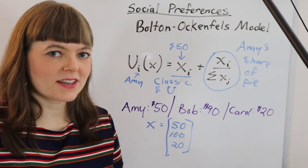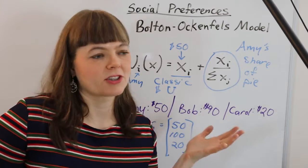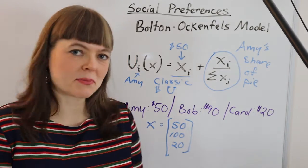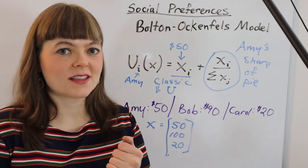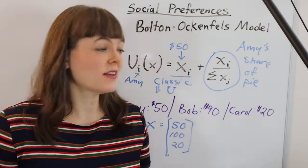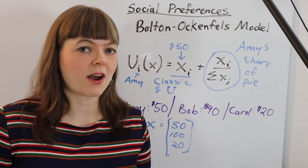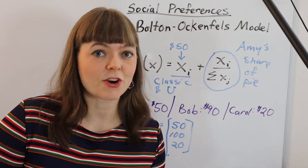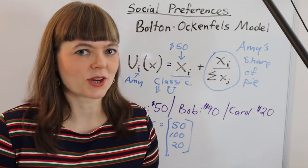And you might imagine why people might care about this. People care about having a bigger share of the pie, and so this is a very simple model of social preferences. If you use this to adjust people's utility over different outcomes, you could get a more accurate view of people's behavior in different game theory situations.